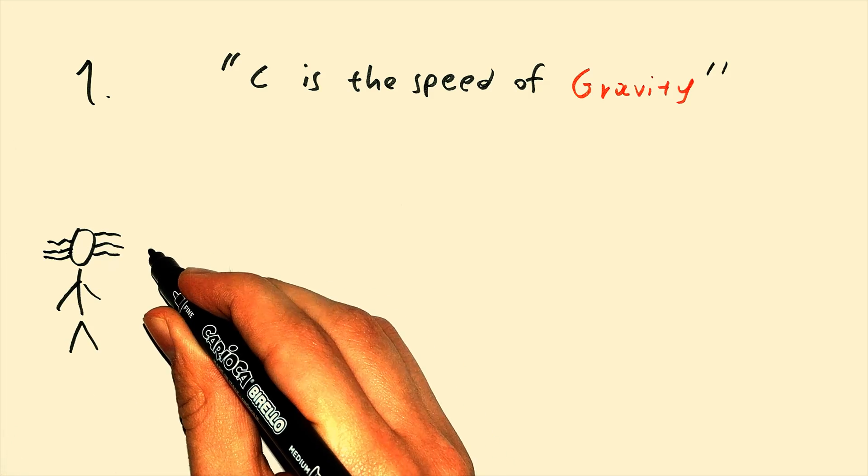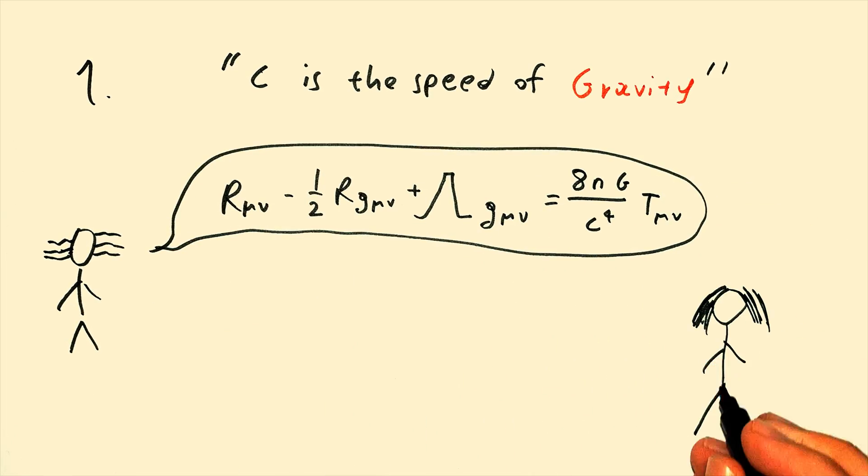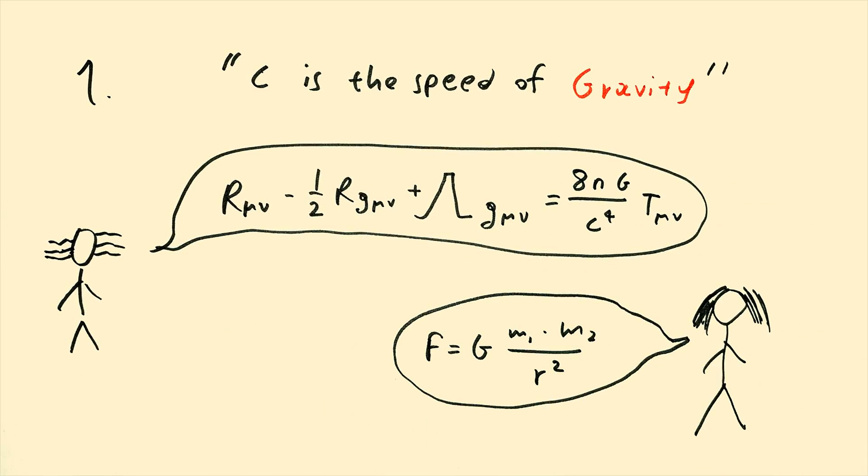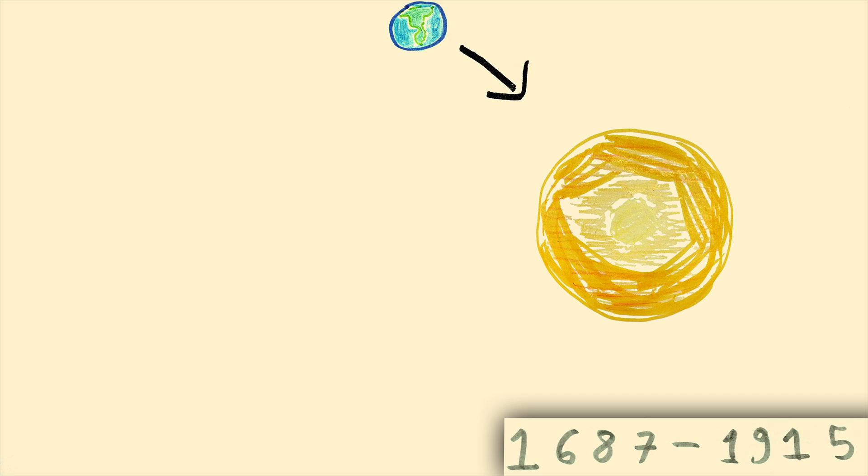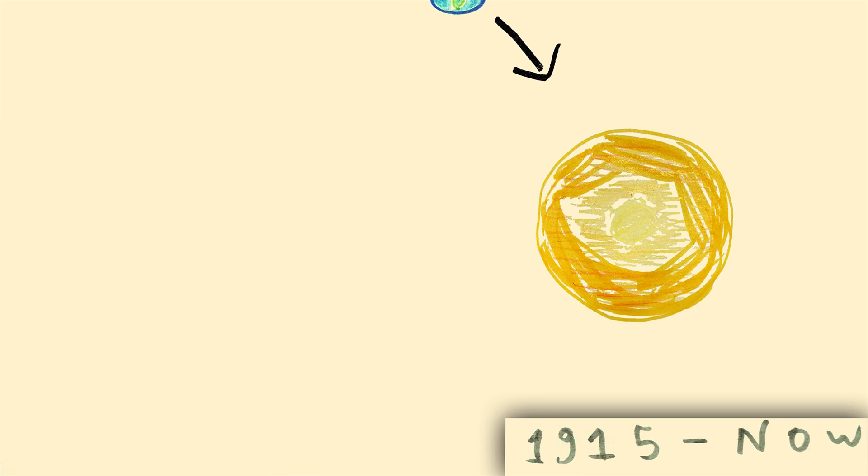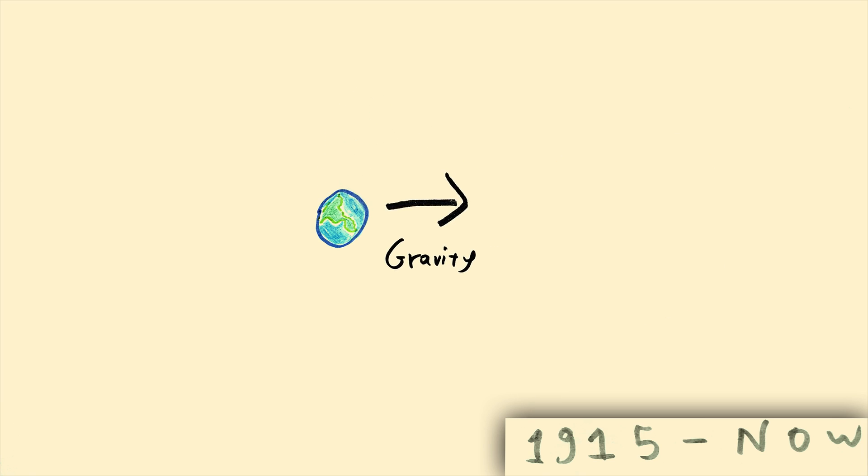C is the speed of gravity. Before Einstein came to revolutionize gravity and Newton's law of gravitation was the standard, we thought that gravity was instantaneous, that if you remove the source of a gravitational field, all objects would immediately notice it and start moving like it's not there. But after 1915, we learned that that's not the case at all, and in order for gravity to influence an object, it has to travel at sea towards it.